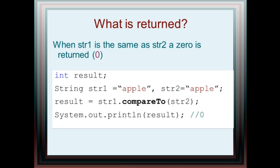Now, if they're the same, if string1 is apple and string2 is apple, calling the compareTo method will result in zero. So when they're equal, the result that is returned is zero.